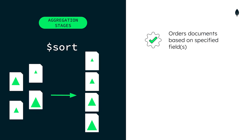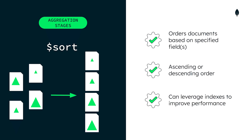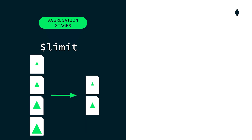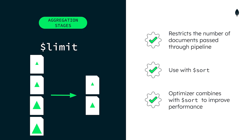The sort stage orders the documents in the pipeline based on a specified field or fields. Documents can be sorted in ascending or descending order, and a sort stage can also leverage an index when placed towards the beginning of a pipeline. The limit stage restricts the number of documents passed to the next stage or final output to a number we specify. This stage is especially helpful when it appears after a sort stage, and whenever possible, the query optimizer will combine the two stages, allowing the sort operation to maintain fewer documents in memory, which can improve performance.